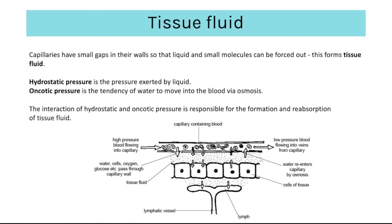Tissue fluid is formed because liquid and small molecules are forced out of the capillaries by high hydrostatic pressure — it's a fluid that ends up surrounding the tissues and cells. Hydrostatic pressure is the pressure exerted by a liquid. Oncotic pressure is the tendency of water to move into the blood by osmosis. Tissue fluid formation and reabsorption is centred around the interaction of hydrostatic and oncotic pressure.